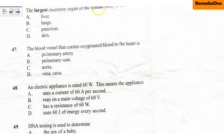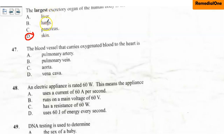Question number 46: The largest excretory organ of the human body is — A. Liver, B. Lungs, C. Pancreas, D. Skin. The correct option is skin. We have four main excretory organs in humans: lungs, liver, skin, and kidney. Pancreas is not part of the excretory system. Skin is the largest — it excretes sweat (water and excess salt). The liver excretes bile, and the lungs excrete carbon dioxide and water.